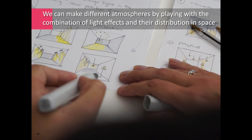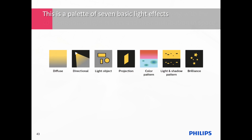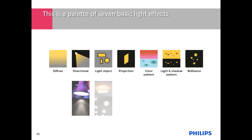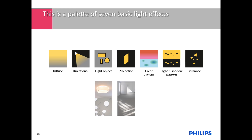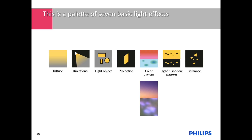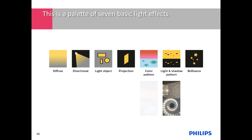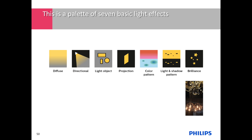Now we move to light in space — how we can make atmospheres by playing with a combination of light effects and their distribution in space. In the toolbox of the lighting designer, there is a design palette of seven basic light effects: diffuse light, directional light, light objects, projected light with a distinct shape, color patterns including gradients, light and shadow patterns, and brilliance or sparkling light effect.